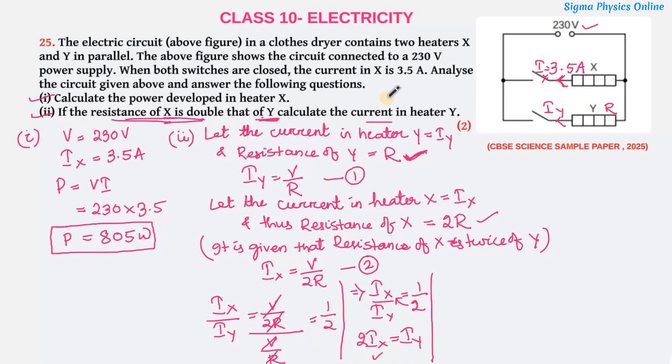Now IX we have is 3.5A, it's given in the question. So this implies IY is 2 into 3.5, that is 7A. So the current flowing in heater Y is 7A. This is the answer.